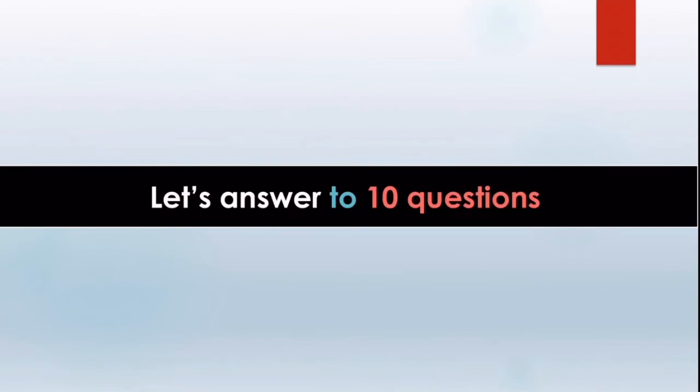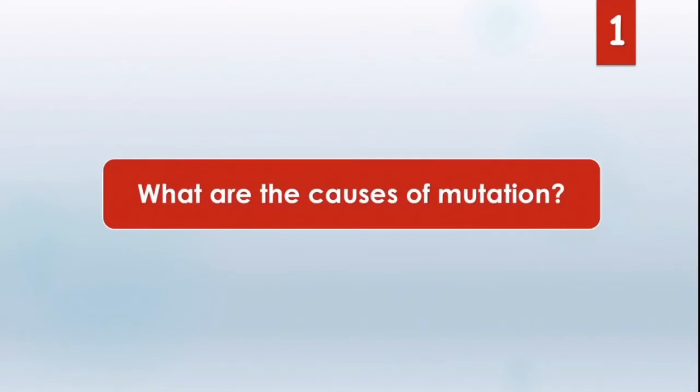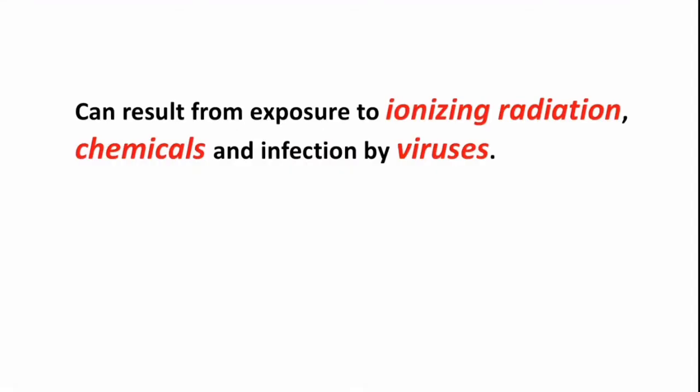Now we will know in detail by answering 10 questions. Our first question is, what are the causes of gene mutation? Gene mutation can result from exposure to ionizing radiation, for example, X-ray, gamma ray, ultraviolet ray.